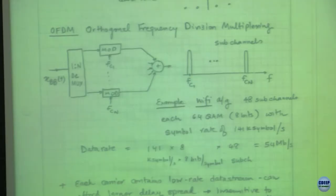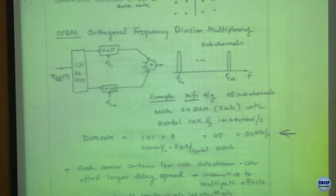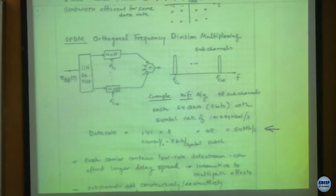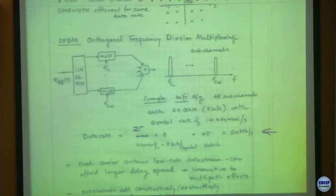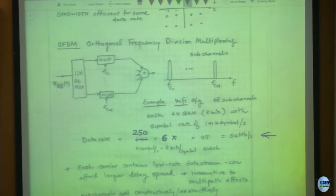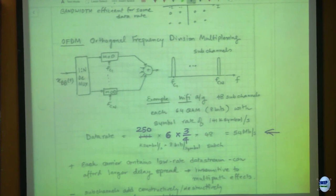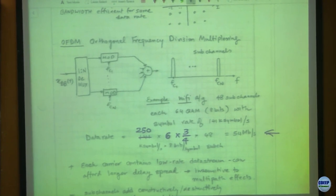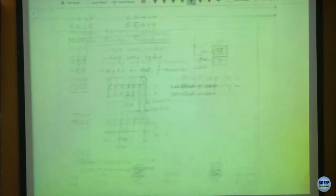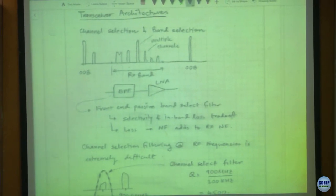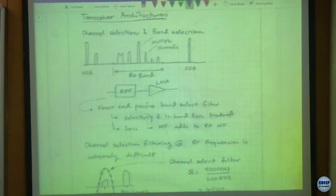Where we were last lecture - this is the part we are going to fix. This should be 250, this should be 6, this should be 3 by 4 and then you get 54 megabits per second - that is a correction. Then we went into transceiver architectures, that was the main thing.